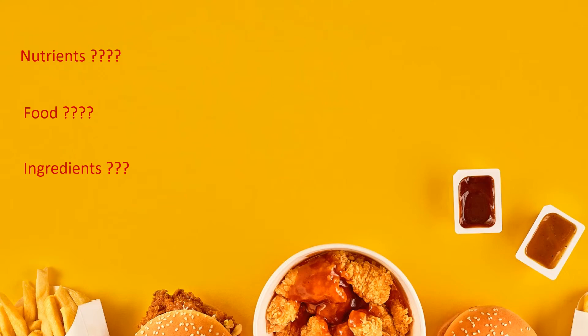Food is the basic source of nutrients — humain nutrient food se provide hota hai. After that we discussed about ingredients. Ingredients kya hota hain? All those materials which are used to prepare a dish are termed as ingredients. For example, to make tea, we need tea leaves, sugar, and water — these are the ingredients of tea. So, all those materials which are required to prepare a dish are termed as ingredients.